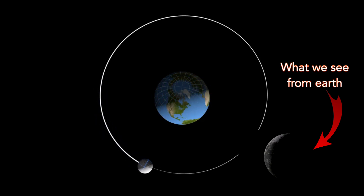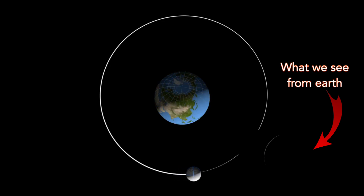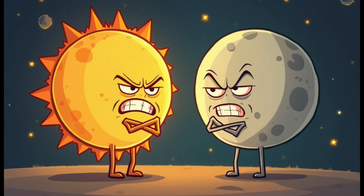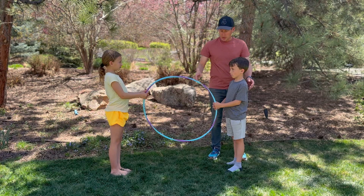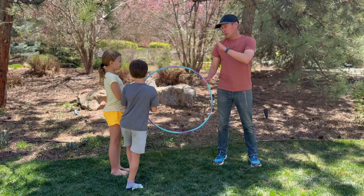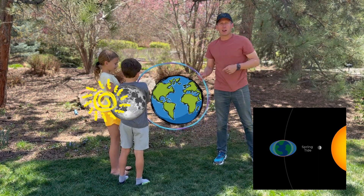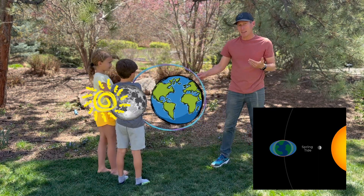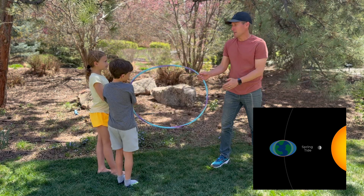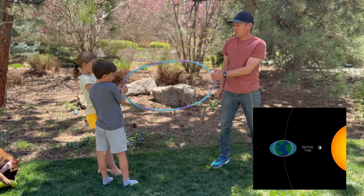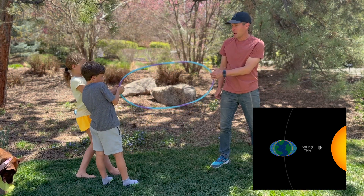All the while, the moon's gravity and the sun's are pulling on the Earth's oceans. Sometimes the sun teams up with the moon, and other times they work against one another. When the Earth, moon, and sun are lined up, we call this the new moon phase.